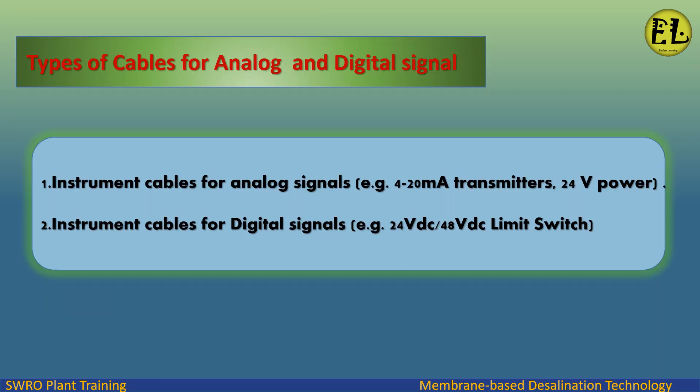Instrument cables for analog signals include, for example, 4 to 20 mA transmitters with 24V power. Instrument cables for digital signals include, for example, 24VDC to 48VDC limit switches.